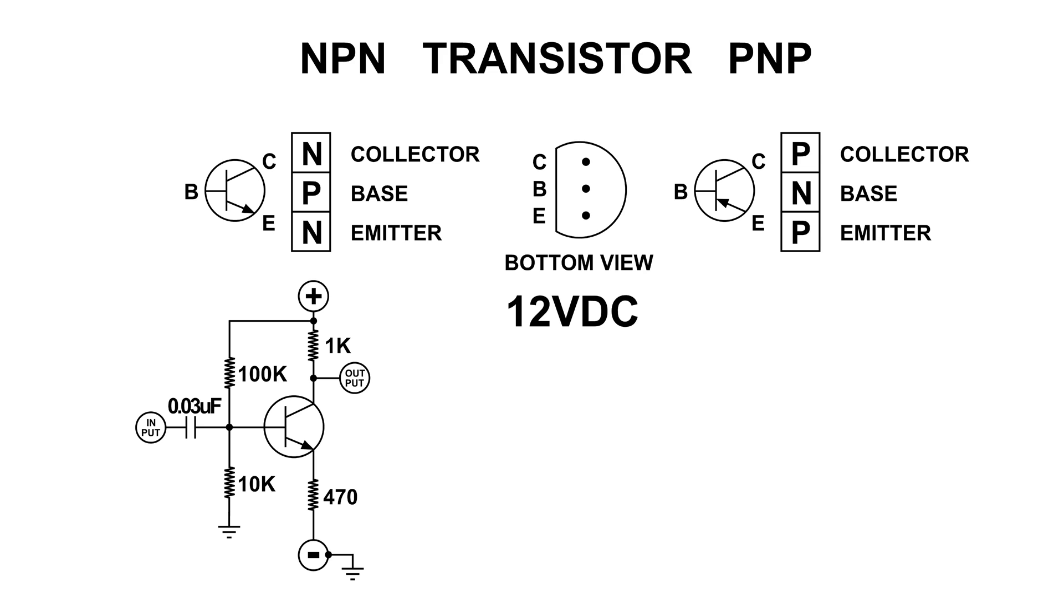The 100k ohm resistor and the 10k ohm resistor is fixed bias and that is on the base of that NPN transistor.